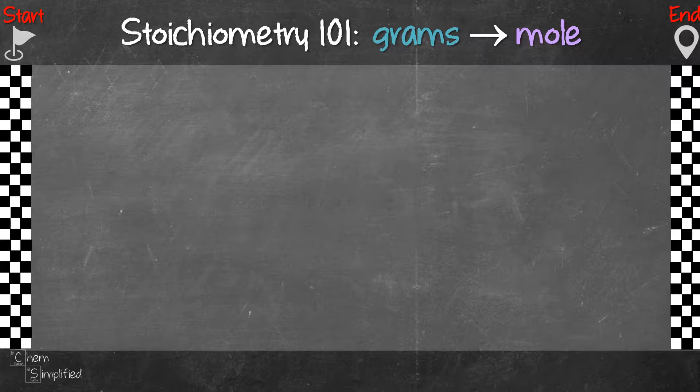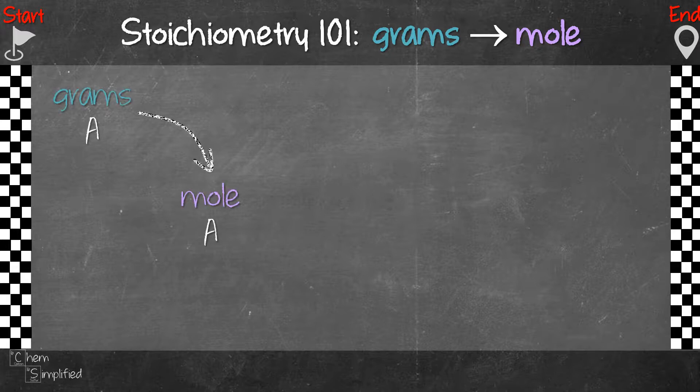Let's say you're given the mass of a substance, let's just call that substance A, and the question asks you to calculate the mole of that same substance. That means you need to go from grams of A to moles of A, and in order to do that you will need to divide with the molar mass of A. So if A is just an atom, then you just divide with the atomic mass of A. If you need a refresher on calculating molar mass, I'll link the video on the top.